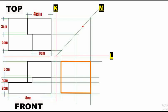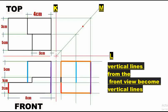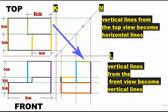To create the right-side view, remember that the vertical lines from the front view become vertical lines in the right-side view, and the vertical lines from the top view become horizontal lines. Adjust your drawing accordingly, following these steps.